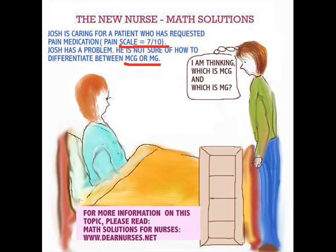What exactly is a gram? Well, in measurement, a gram is equal to 1,000 milligrams, and a milligram is equal to 1,000 micrograms. A gram is equal to 1,000 milligrams, and a milligram is equal to 1,000 micrograms.